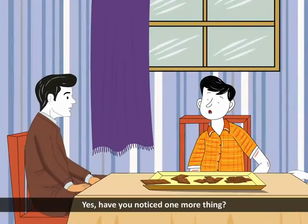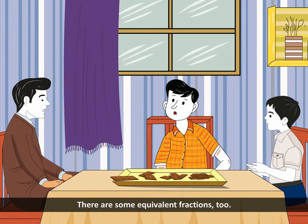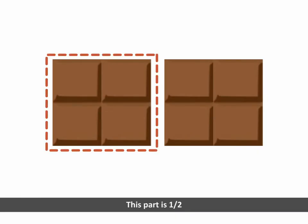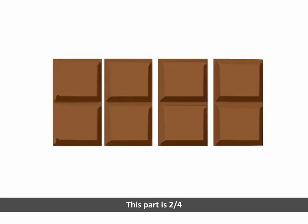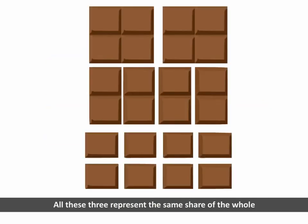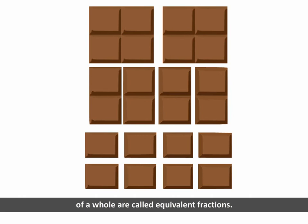Have you noticed one more thing? What, dad? There are some equivalent fractions too. Equivalent fractions? What is this, dad? Where is this? Please explain us. This part is 1 upon 2. This part is 2 upon 4. This part is 4 upon 8. All these three represent the same share of the whole, but a different number of equal parts. These are called equivalent fractions. The fractions which name the same part of a whole are called equivalent fractions.